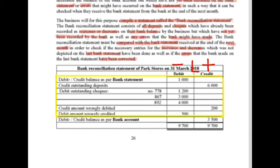To clarify one thing: our bank account balance at the end refers to an asset balance, meaning it increases on the debit side and decreases on the credit side — which is the opposite of the rest of the bank reconciliation statement.